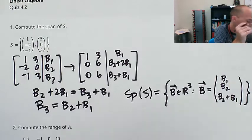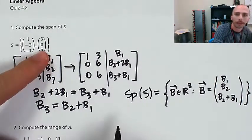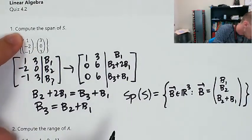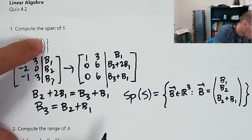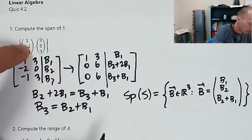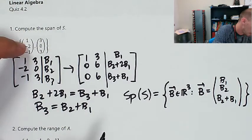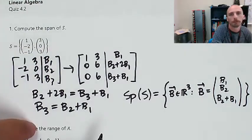Let's just verify by adding these vectors together: four, negative two, two — that works. Let's try adding ten of these to one of these: 10 plus 3 is 13, negative 20 plus 0 is negative 20, and negative 10 plus 3 is negative 7. Sure enough it works — it's linear algebra.